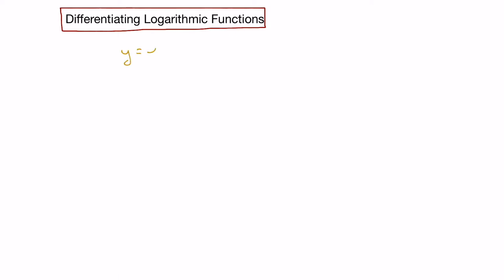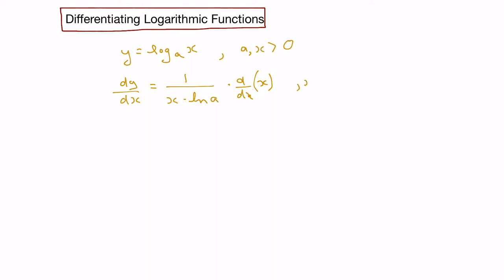Let's look at how to differentiate logarithmic functions. Logarithmic functions are in the form y equals log base a of x, where both a and x are greater than 0. The derivative of y with respect to x is equal to 1 over x times the natural log of base a, times the derivative of x. Note that x must be greater than 0, otherwise we'd have a 0 in the denominator. We can use this formula to find the derivatives of logarithmic functions.